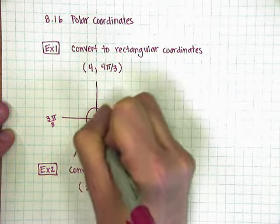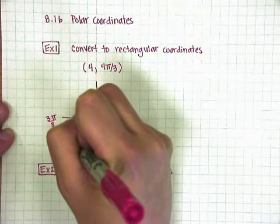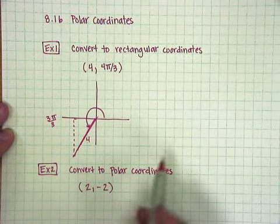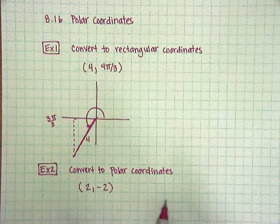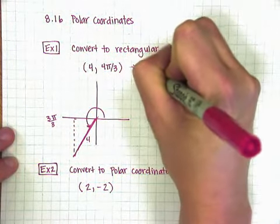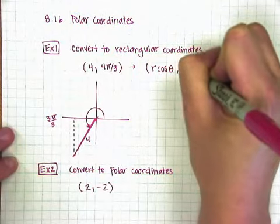And then I'm going to go 4 units out, so this guy is 4. I'm just going to estimate what that would look like. Now, I want to find my x and my y coordinates, so what I really want to know is how far did I go back, and how far did I go down. To do this, you can use the formula. So the formula for converting is r cosine of theta, r sine of theta.